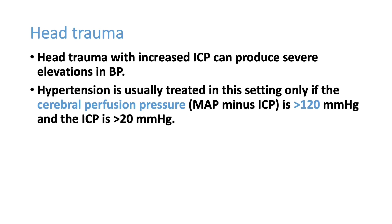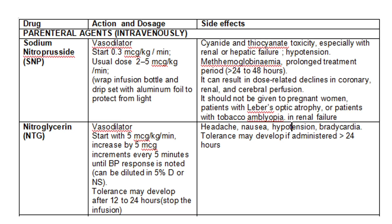In head trauma, we must reduce BP quickly but also maintain cerebral perfusion pressure — defined as MAP minus intracranial pressure — greater than 120 mmHg. If BP is very high in head trauma, it may be an autoregulatory mechanism to maintain cerebral perfusion pressure. Never reduce BP drastically without assessing whether the patient has head trauma or raised ICP.